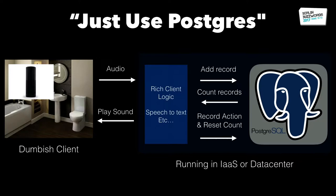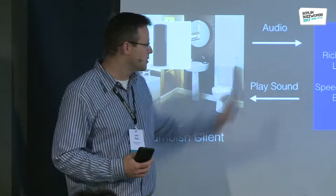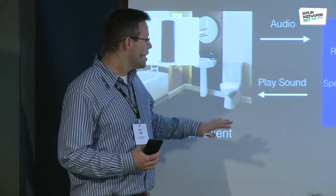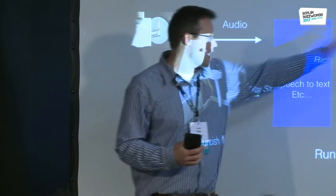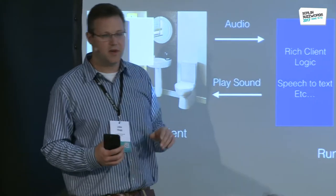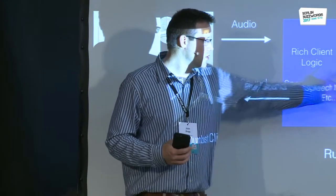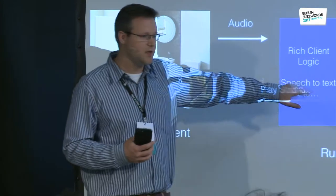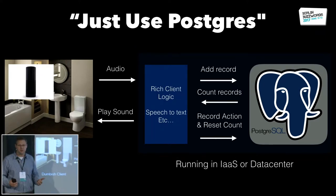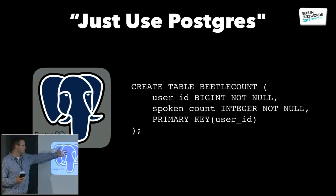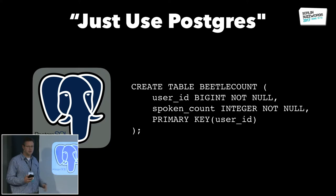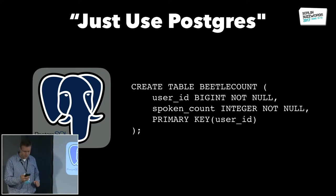So how does this look? I've got some dumb client — maybe one of these microphones — and I send audio to some rich client logic in my data center. The rich client logic does speech-to-text. Any time it sees the word Beetlejuice, it adds a record into Postgres, counts how many times I've said it, and if it's three, records that, takes an action, resets the count, and sends a message back to my speaker to play some clip from the movie. It's a fairly straightforward, traditional way of solving this problem.